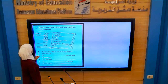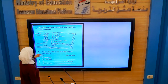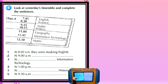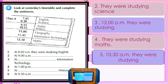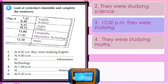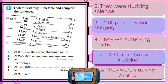Let's see Exercise 4. This is a timetable — yesterday's timetable. Complete the sentences. At 9 a.m., they were studying English. At 9 a.m., they were studying Science. They were studying Information Technology at quarter to 12. At 1 p.m., they were studying Math. At 10:30, half past 10 a.m., they were studying History. At 9:30, they were studying Arabic.